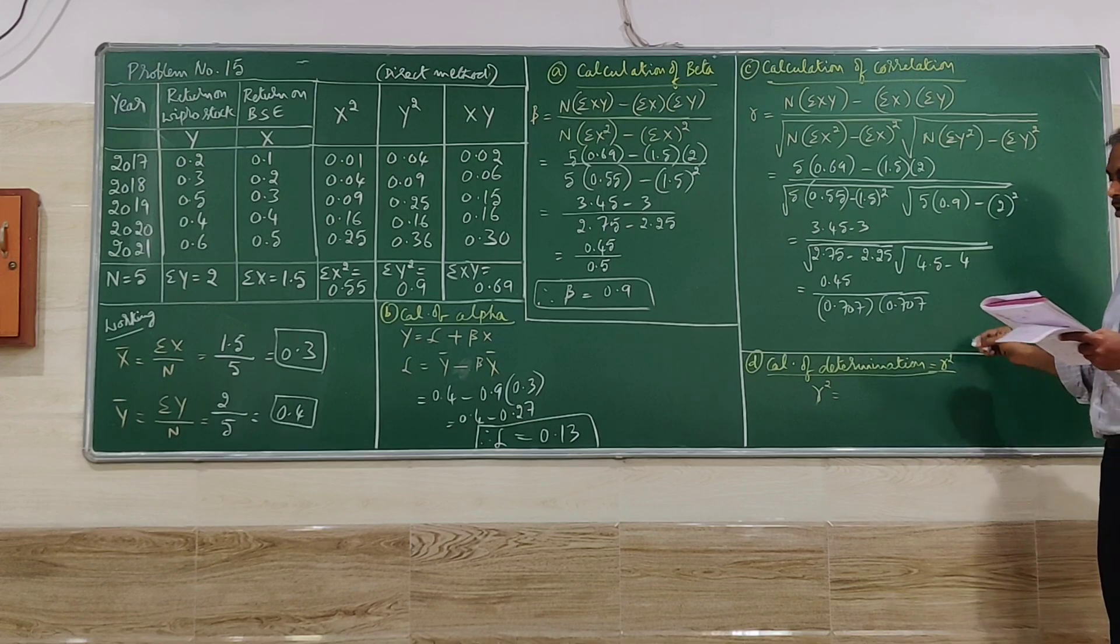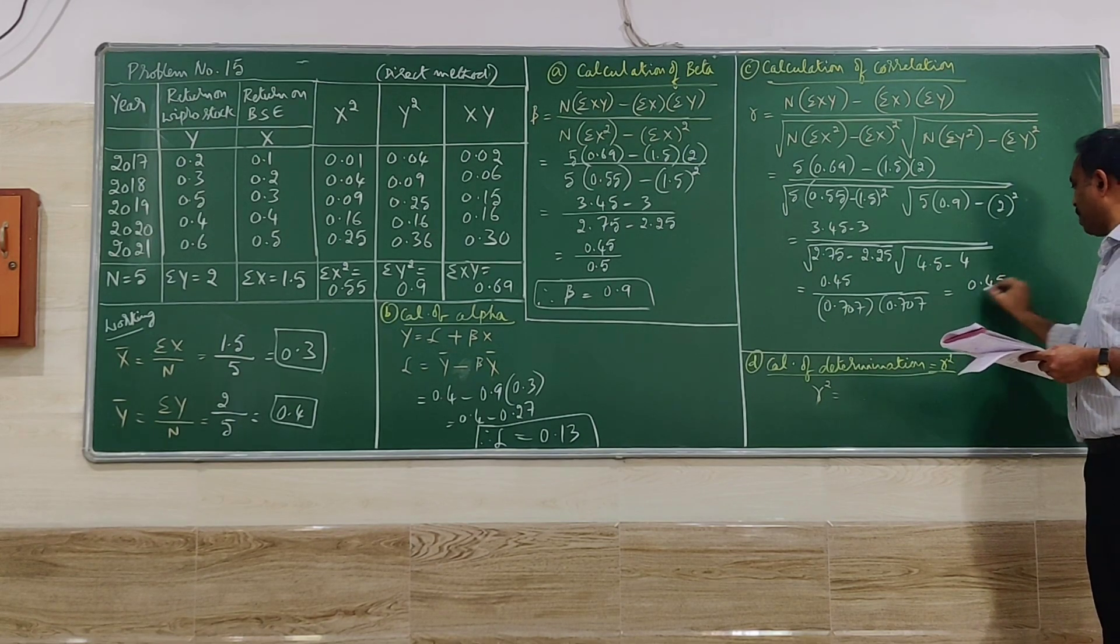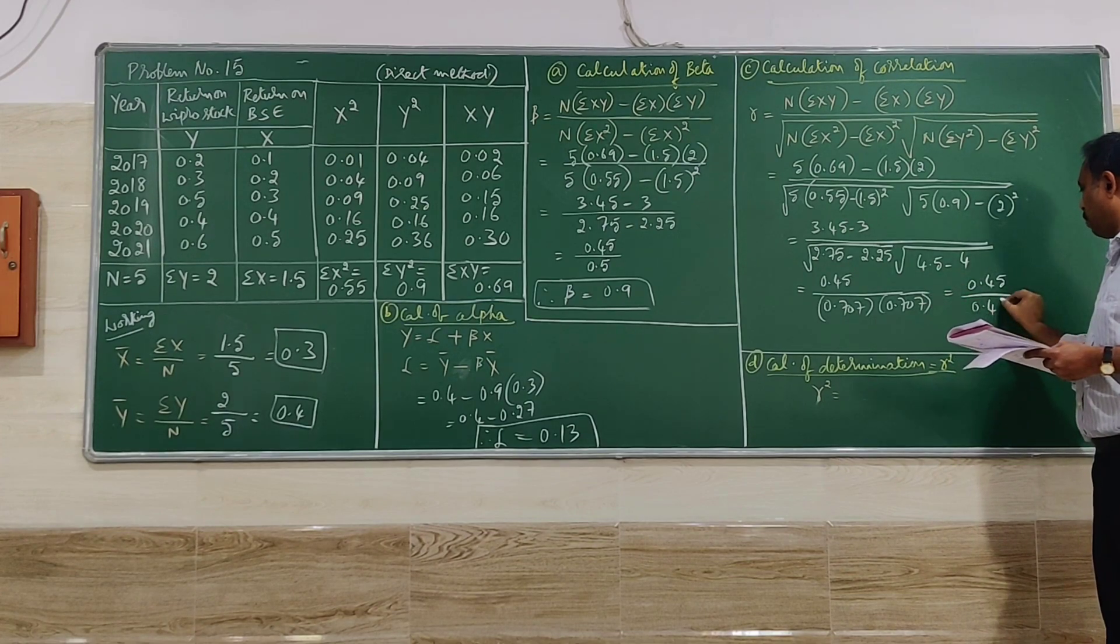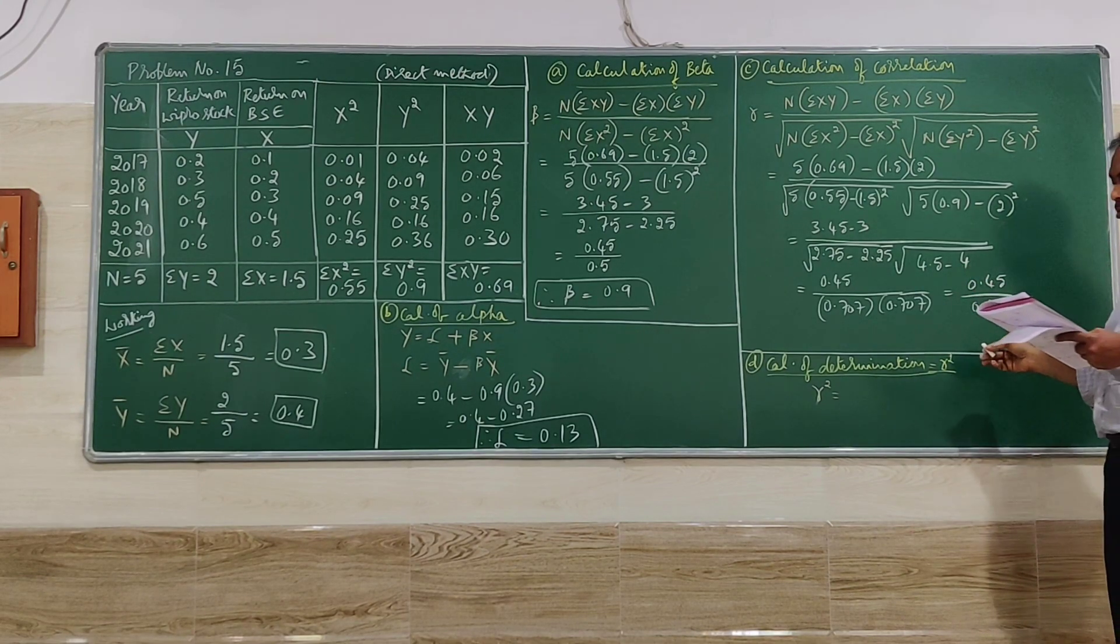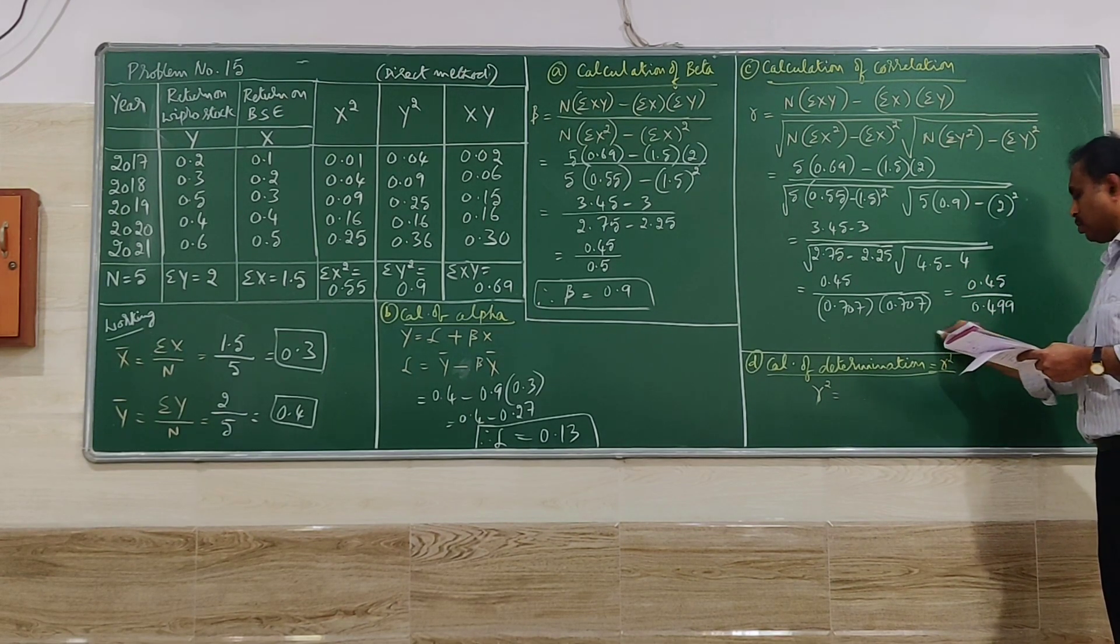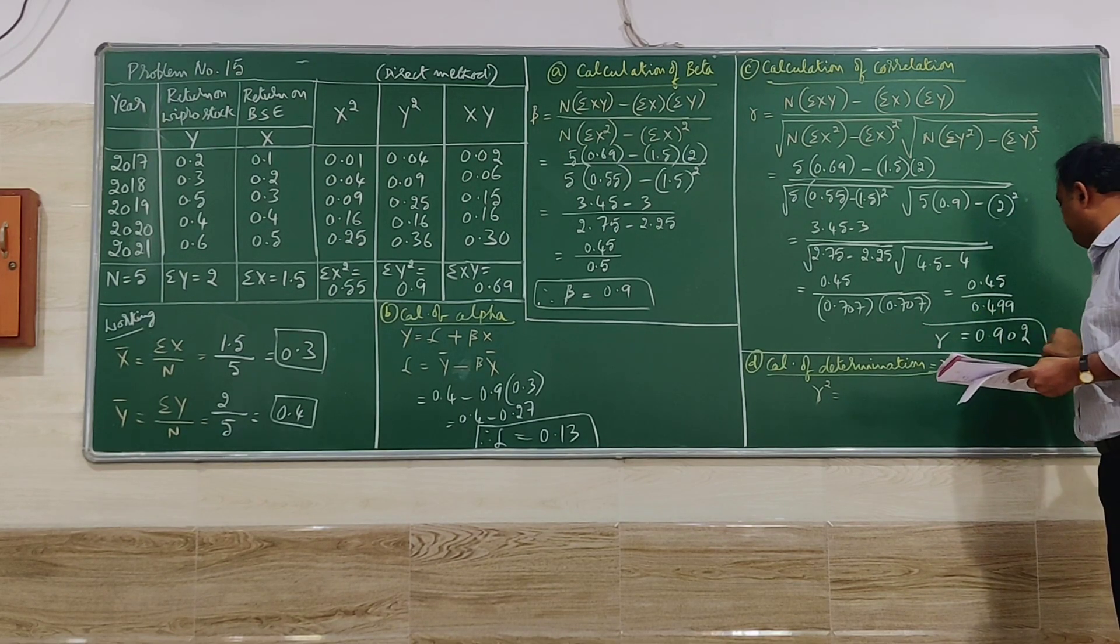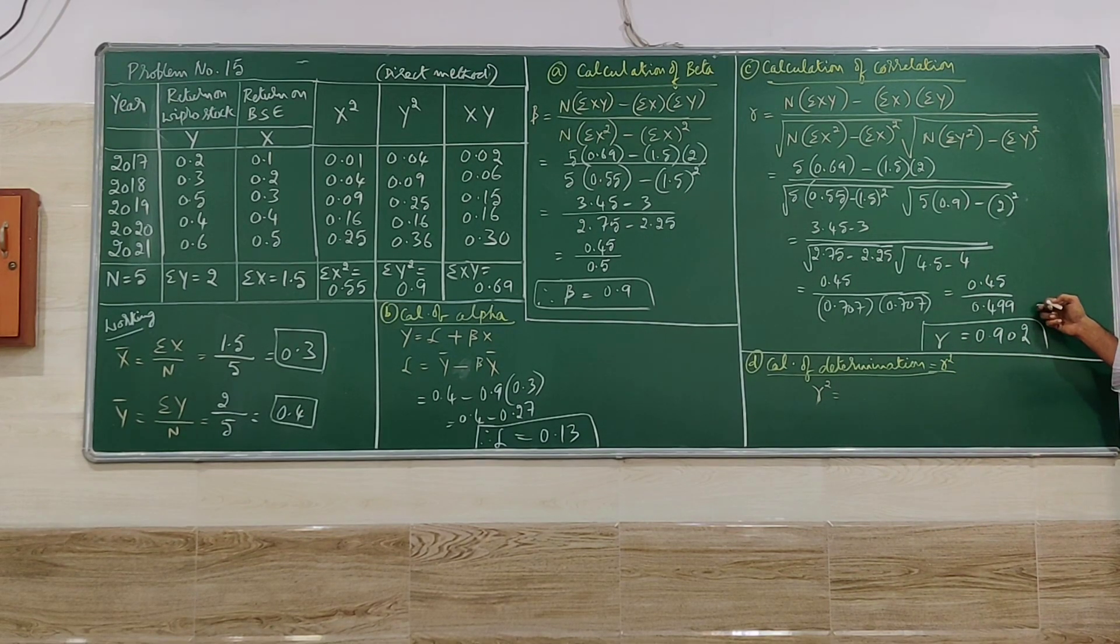So simplify further, you will be getting 0.45 divided by 0.499. So r is equal to 0.902. So when you divide 0.45 divided by 0.499, correlation value is 0.902.